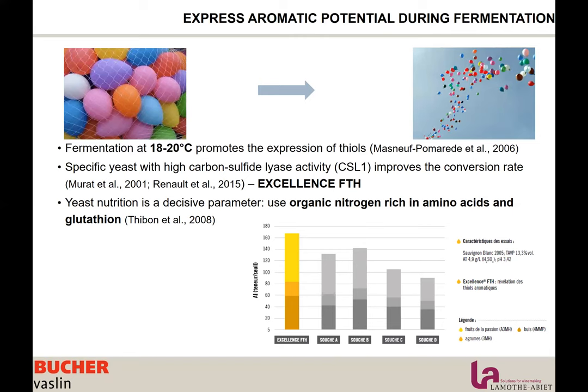Yeast nutrition is a decisive parameter. Using organic nitrogen rich in amino acids and glutathione is going to increase the production of volatile thiols and improve the yeast's conversion rate. The yeast will be comfortable with no stress, able to use glutathione and cysteine to produce thiols and focus its activity on releasing thiols. The idea is: no stress, high temperature, good nutrition with organic nitrogen rich in amino acids, and the right yeast.